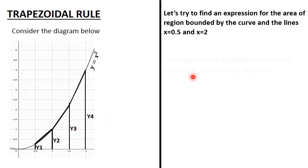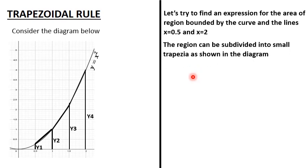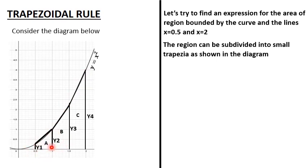To derive the formula, we need to subdivide the region into smaller trapeziums as shown in the diagram. We divide the curve into smaller trapeziums: trapezium A, trapezium B, and trapezium C. The accuracy of the rule will depend on the number of trapeziums — the more trapeziums you have, the more accurate your area will be. In our case we only decided to have three trapeziums.